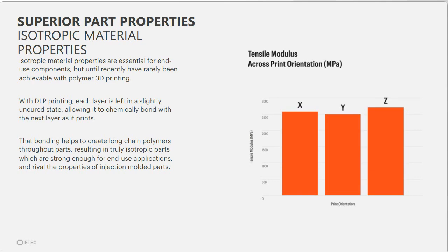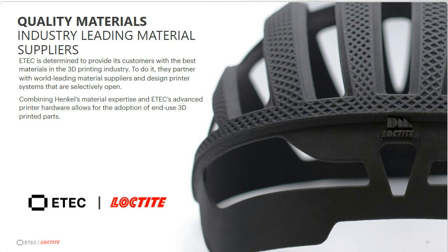One great benefit of DLP compared to FDM-style printing is that while your part is curing, it's left slightly uncured so the next layer bonds to it completely, leading to isotropic part properties. Tensile test data shows the parts are essentially isotropic — which is what you'd require for a part trying to replace injection molding or machining. This leads into our partnership with Loctite. We recognize Loctite as an industry leader in material supply, and I'm now handing it off to Daniel to talk about materials validated on the Extreme 8K.